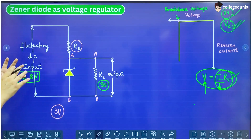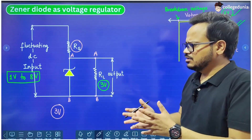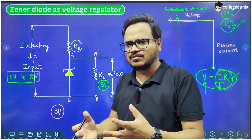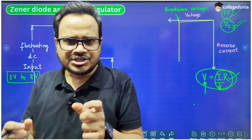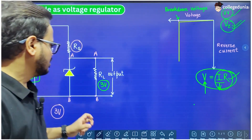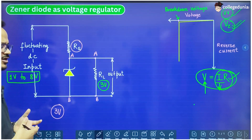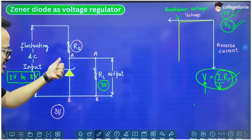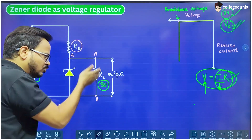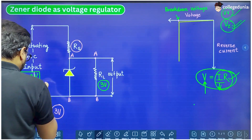We can have Zener diodes of different breakdown voltages. Different Zener diodes of different breakdown voltages are very easy to prepare and they are available in the market — we just have to change the doping concentration in the P and N region of the P-N junction. So we can make Zener diodes of different breakdown voltages, and suppose this is the Zener diode having the breakdown voltage of 3 volt, which is the output required across this LED.